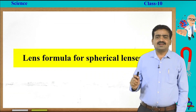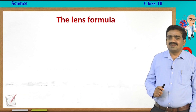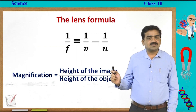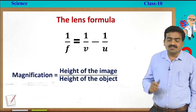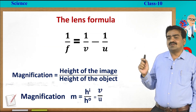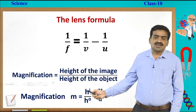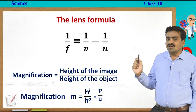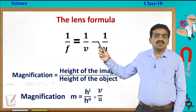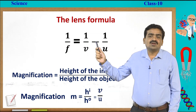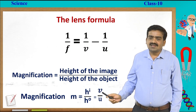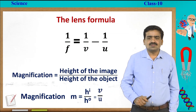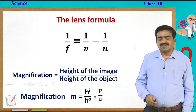Now let us move on to the lens formula for spherical lenses and recall the formula. 1/f = 1/v − 1/u, where f is focal length, v is image distance, and u is object distance. Magnification is calculated as m = hᵢ/hₒ = v/u. One important thing to remember: in the mirror formula there is a plus sign, but in the lens formula there is a minus sign. Also, for magnification, mirrors use −v/u while lenses use +v/u. These are the small differences between the mirror formula and the lens formula.